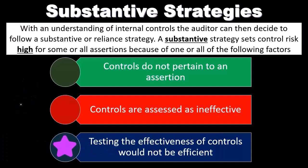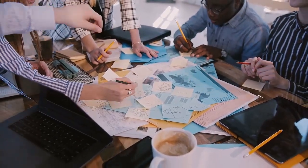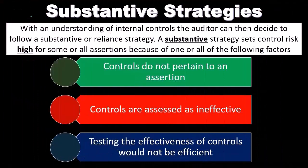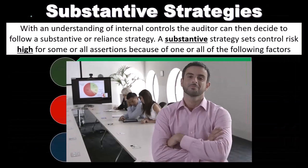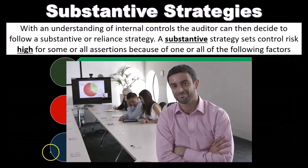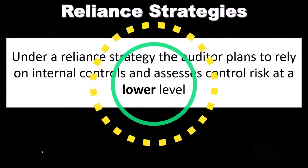Testing the effectiveness of controls would not be efficient. It's possible that the internal controls are in place, but testing them may be more difficult and take more time than the substantive testing in some cases. We're trying to do less work — that's the point of relying on internal controls in the first place. If it takes more work to test the internal controls than to do the substantive testing, then we'll just do the substantive testing.